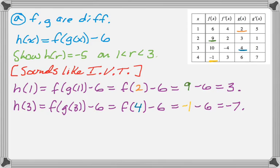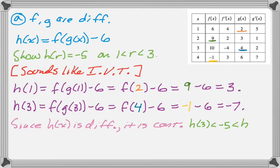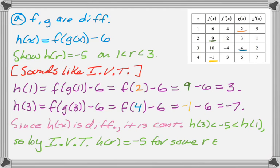So, what I'm going to do here is I'm going to say that h is differentiable, which means that it must be continuous, because differentiability implies continuity. Then I know that h of 3 is less than negative 5, which is less than h of 1. So, by the intermediate value theorem, I am guaranteed that h of r equals negative 5 for some value of r between 1 and 3. Alright, so that's intermediate value theorem.